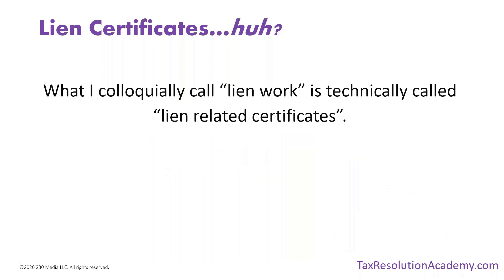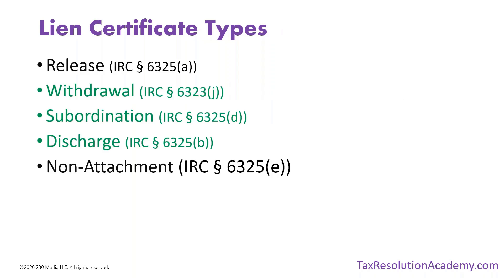What I colloquially refer to as lien work is technically called lien-related certificates. There are multiple different types of lien certificates: lien releases, withdrawals, subordinations, discharges, and certificates of non-attachment. If you want to delve into the specific sections of the Internal Revenue Code where those are discussed, the references are here for you.